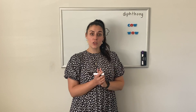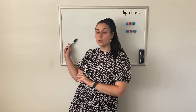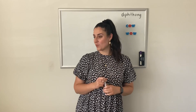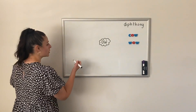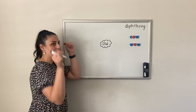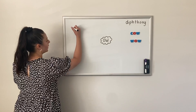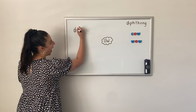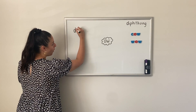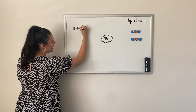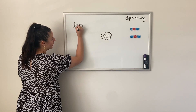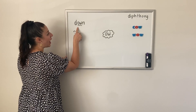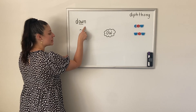So what I'm going to do now is I'm going to do two more over this side, and then you can have a go on the seesaw. The first word we are going to look at is down: D, OW, N. Down.